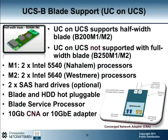On initial launch, Cisco supported running UC applications on the B200 half blade server, but not on the B250. The reasoning was that Cisco only allowed four applications on a single blade, so deploying a full-width blade would be a waste. Recently Cisco has opened up this restriction. On both blade server flavors, we have different model designations. The M1 uses the Intel 5540 Nehalem processors, and the M2 uses the Intel 5640 Westmere processors. When ordering the UCS B-Series for UC application use, you have the option of installing two internal SAS drives. These drives are used to load the hypervisor only. Cisco doesn't support running UC applications on direct-attached storage, or DAS, when deployed on the UCS B-Series platform.